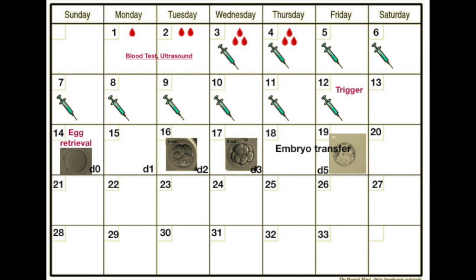Counting from the start of the cycle, the embryo transfer would fall on day 17, 18, or 19. A fresh embryo transfer procedure can be performed on these days. If the transfer is done at blastocyst stage, which is the day five or day 19 transfer, two weeks of luteal phase support medications that help with implantation are given, bringing the total to around day 33 or 34 of the cycle.